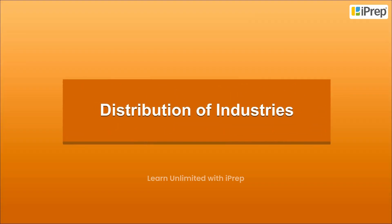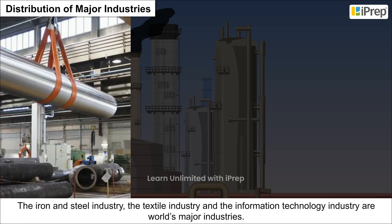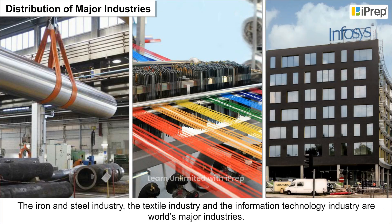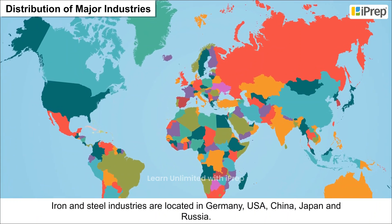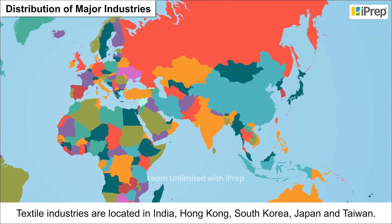Distribution of major industries — the iron and steel industry, the textile industry, and the information technology industry are the world's major industries. Iron and steel industries are located in Germany, USA, China, Japan, and Russia.